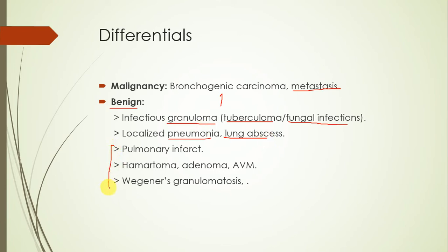In case of lung abscess, the patient would have chills, rigors, and a swinging rise of temperature. Other differentials include pulmonary infarct — in that case, the patient would have a history of prolonged sitting or a condition predisposing to deep venous thrombosis. However, he didn't have leg pain, leg swelling, palpitations, or shortness of breath, which reasonably excludes pulmonary infarct.